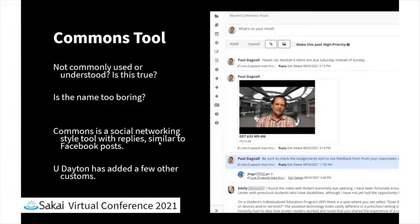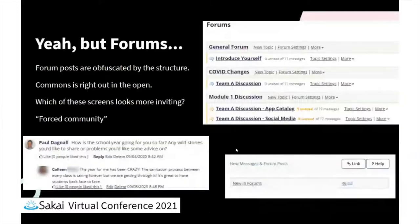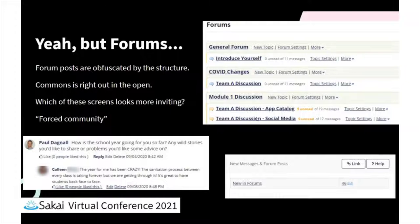It's a social networking style tool with replies similar to Facebook posts, and at the University of Dayton we've added a few extra customs to it. You might be saying, why do we need something like this when we have the Forums tool? I'm going to make the case that forums posts are kind of obfuscated by the structure of where they are in the Sakai course site. If you're even in the forums tool, it doesn't look really social - it's just kind of links. Eventually, if you click into the forums tool, click inside the correct topic, and then click inside the correct conversation within that topic, you can get to something that looks social. But that's a lot of work.